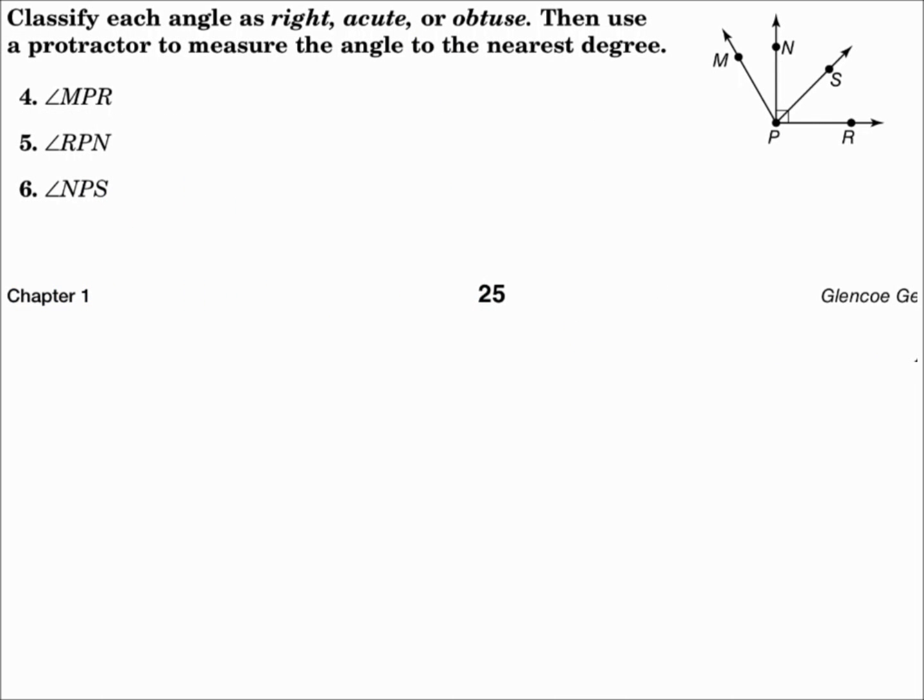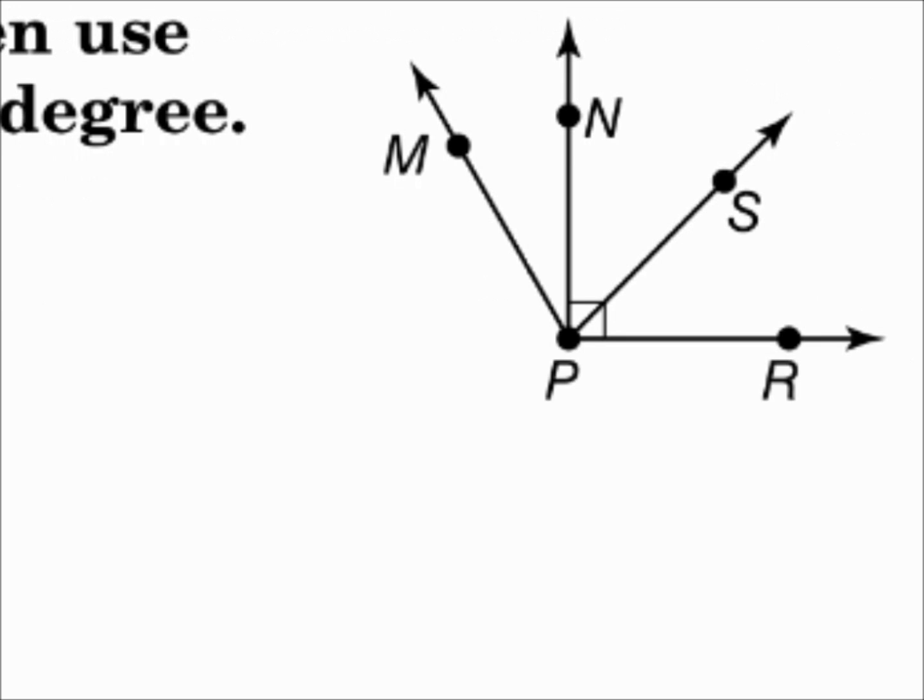Number five, angle RPN. Angle RPN is right there. Notice the right angle box that's drawn for you, so you know that it's a right angle, exactly 90 degrees. If you took a protractor to measure, it would be the same. The measure of angle RPN equals 90.